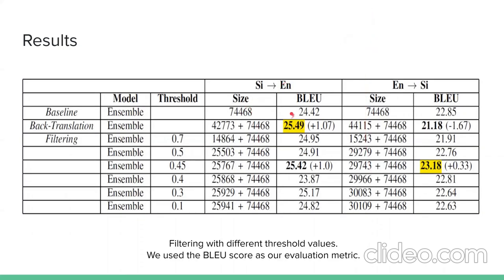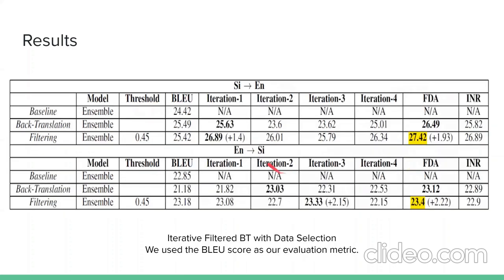For Sinhala-to-English direction, vanilla back-translation outperforms the baseline model. Best results for filtered back-translation are obtained with a threshold value of 0.45, though there is a slight drop from vanilla back-translation as the synthetic dataset drops from 42,000 to 25,000 sentences. With iterative filtered back-translation at iteration one, an improvement of four BLEU points over vanilla back-translation is seen. Combining the FDA algorithm with iterative filtered back-translation gives a plus-3 BLEU improvement over the baseline and a plus-1.93 BLEU improvement over vanilla back-translation.